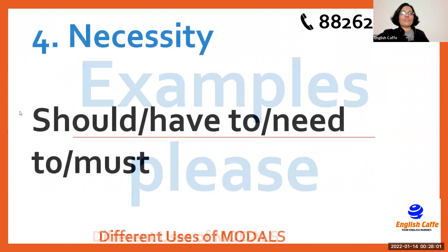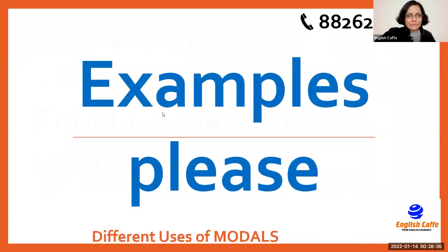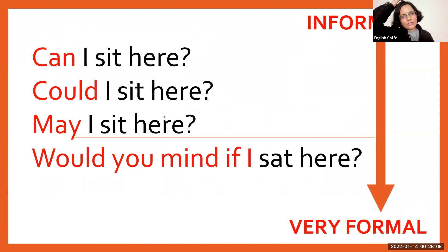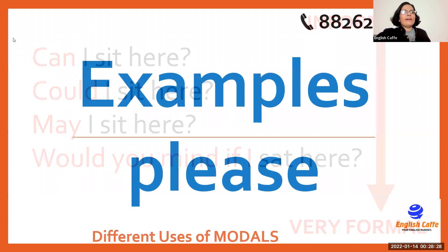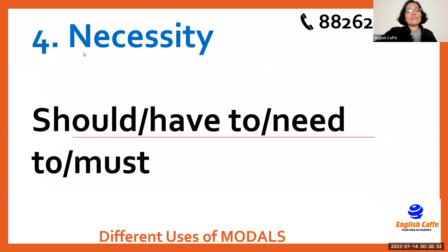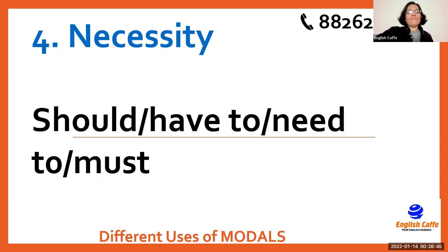Now, use number four — we also use modals to talk about necessity. Necessity means something that is a requirement — something you can't avoid. We use the modals: should, have to, need to, and must. For example: if you're getting late and need to leave, you can say — I should go now, I have to go now, I got to go now, I need to go now, I must go now. All these sentences mean it is necessary for you to go.